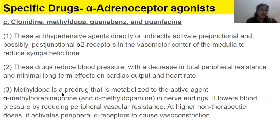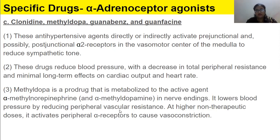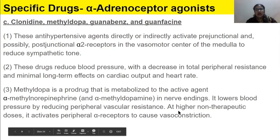Methyldopa is a prodrug that is metabolized to its active agent, alpha-methyl-norepinephrine, in nerve endings. It lowers blood pressure by reducing peripheral vascular resistance. At higher non-therapeutic doses, it activates peripheral alpha receptors to cause vasoconstriction.